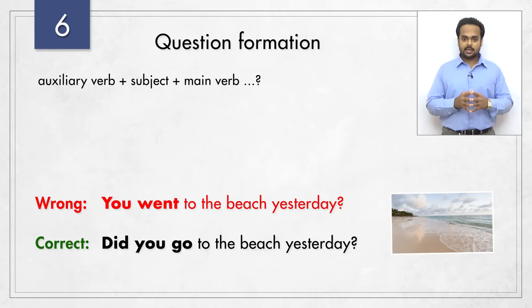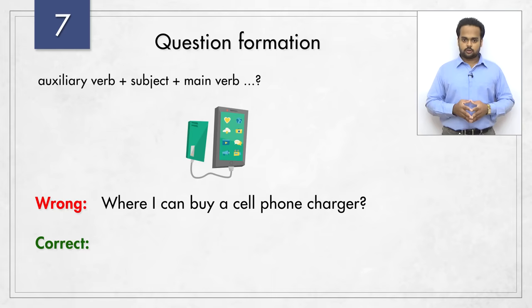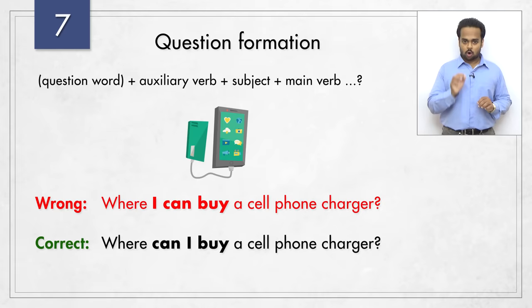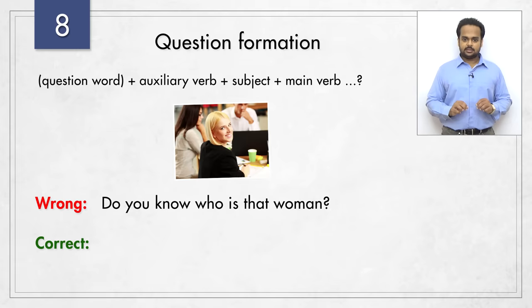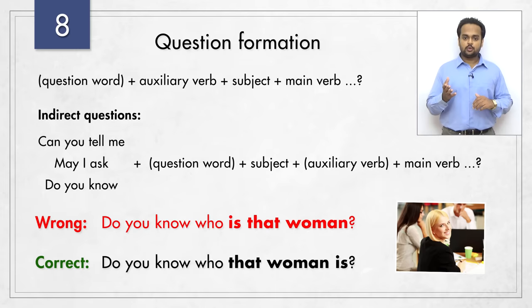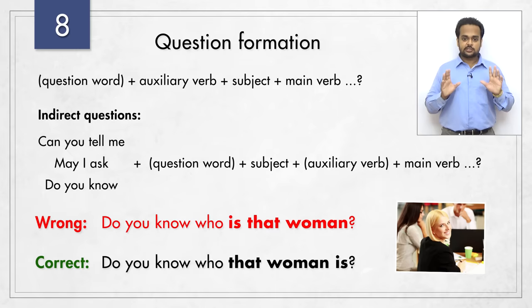Next sentence – 'where I can buy a cell phone charger?' The correct question is 'where can I buy a cell phone charger?' This is just like the previous question but it has a question word, so we put that at the beginning. Sentence number eight is 'do you know who is that woman?' – wrong. It should be 'do you know who that woman is?' If you start a question with 'do you know,' 'may I ask,' 'can you tell me,' etc., then we call it an indirect question, which is more polite. For this type of question, we don't change the word order. We first put the question word, then the subject, then the auxiliary verb if we have one, and then the main verb.